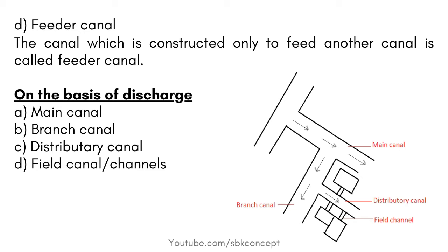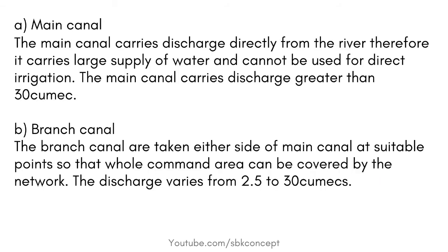On the basis of discharge, canals are classified as: Main Canal, Branch Canal, Distributory Canal and Field Canal. The Main Canal carries discharge directly from the river. Therefore, it carries a large supply of water and cannot be used for direct irrigation. The Main Canal carries discharge greater than 30 cumecs.